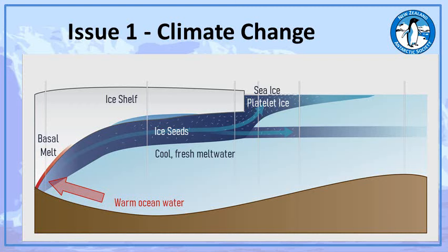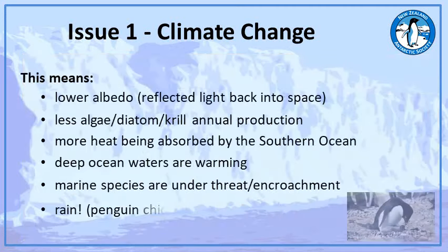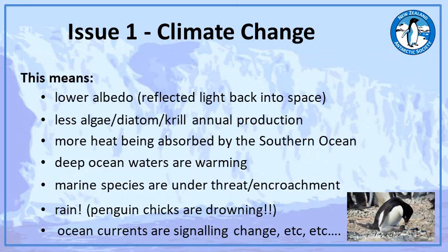If you want to research more, look up Thwaites Glacier — T-H-W-A-I-T-E-S — online; there is quite a lot of information about what is happening there. Because there is less sea ice, there is less light being reflected back into space — low albedo — so that solar radiation is being absorbed in the oceans. There is also less algae, phytoplankton, and diatom production underneath the sea ice, leading to potentially less krill production and less food going into the marine food chains circulating through the world's oceans.